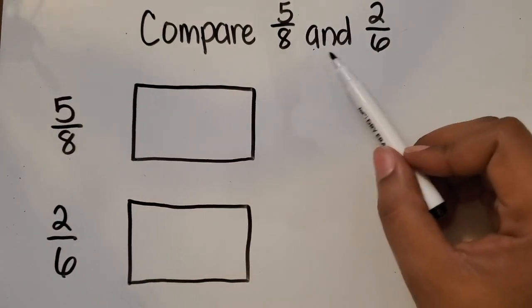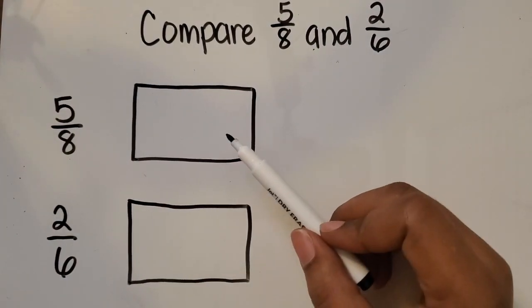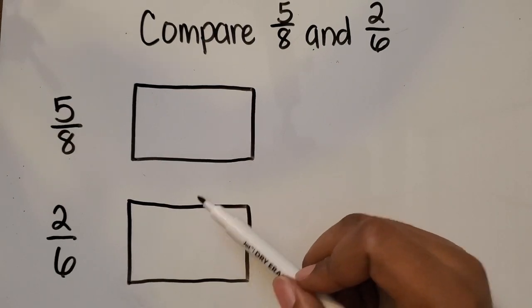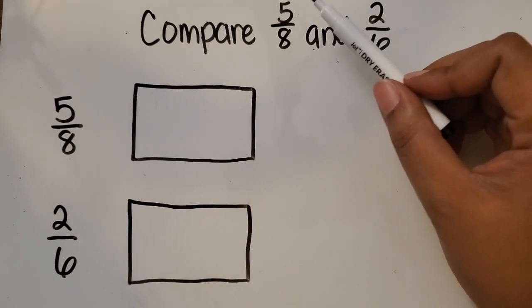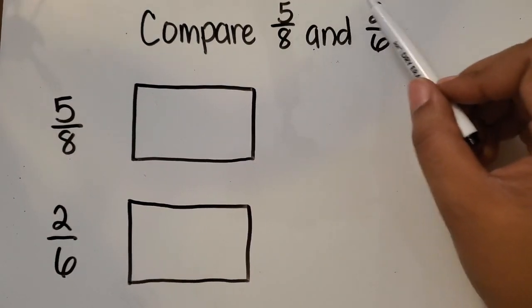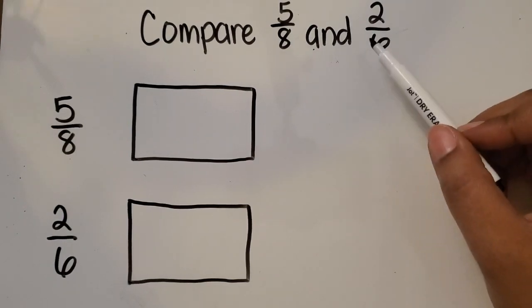We are going to compare 5 eighths and 2 sixths using rectangular area models. In our comparison, we have two fractions with different numerators and different denominators.